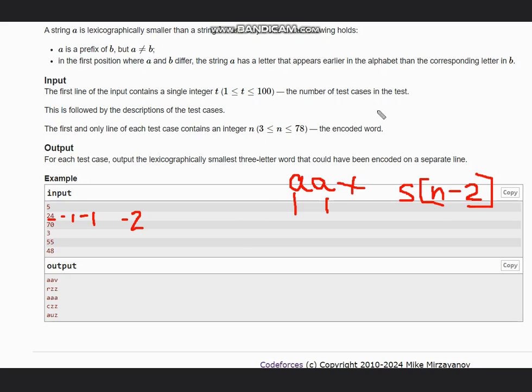For this we can create a string S. Our string S would be from A to Z, the whole string from A to Z, and put any character here, suppose capital A or something, so that our index starts from 1. Now string of n minus 2, which is string of 22, will give us V here, so our answer becomes AAV.